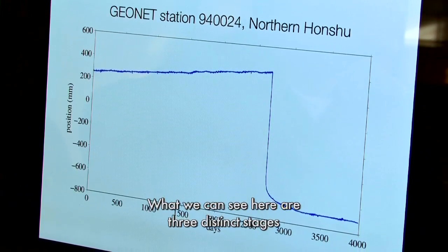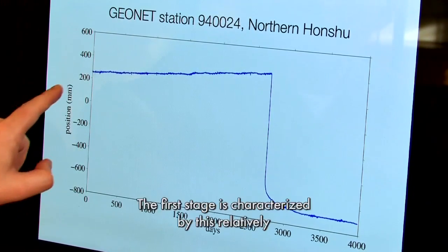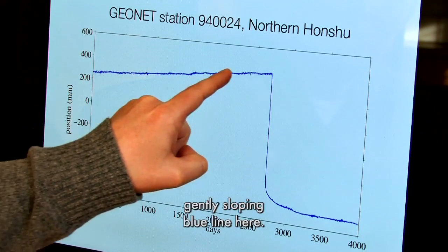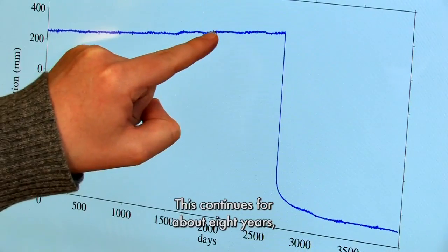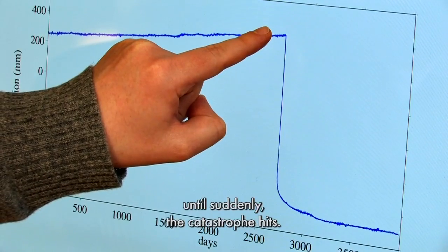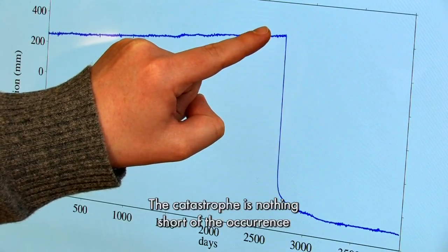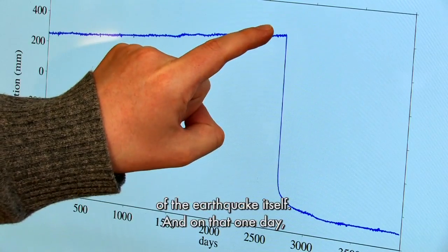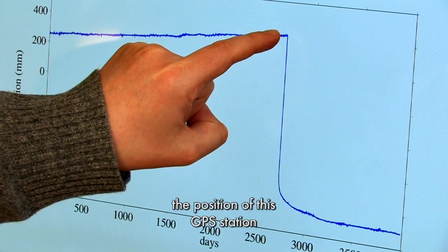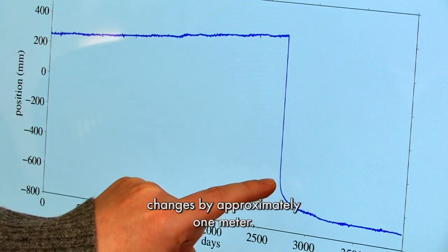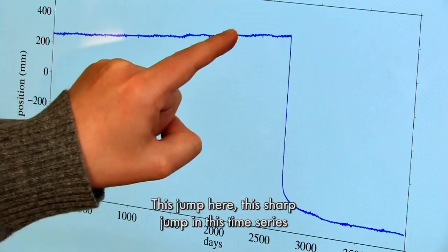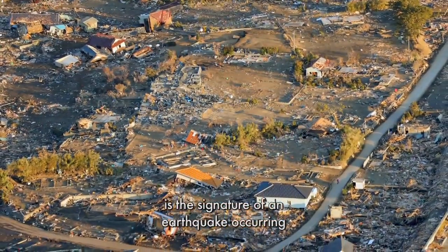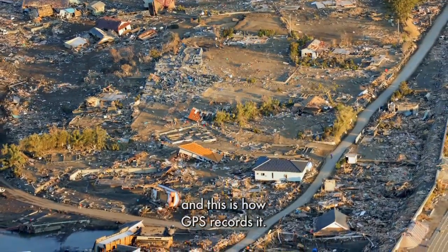What we can see here are three distinct stages of the earthquake cycle. The first stage is characterized by this relatively gently sloping blue line. This continues for about eight years until suddenly the catastrophe hits — the occurrence of the earthquake itself. On that one day, the position of this GPS station changes by approximately one meter. This sharp jump in the time series is the signature of an earthquake occurring, and this is how GPS records it.